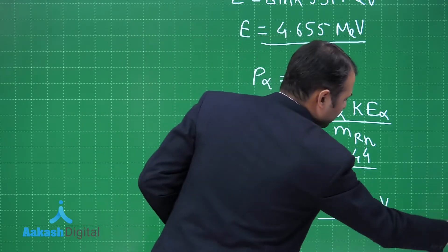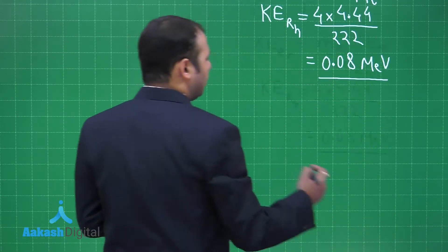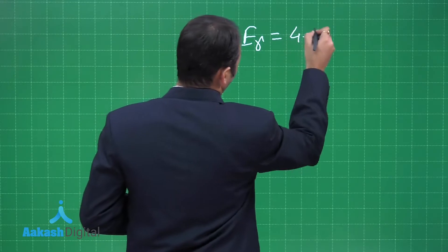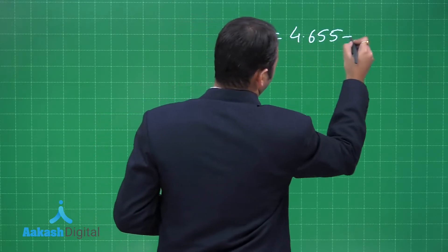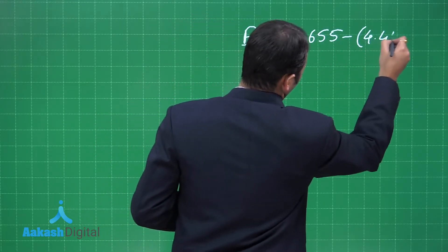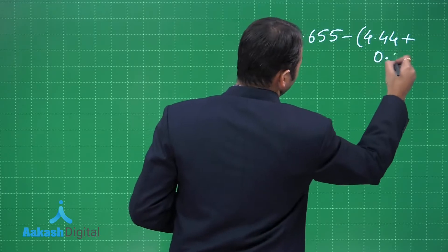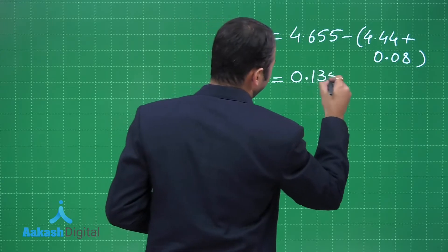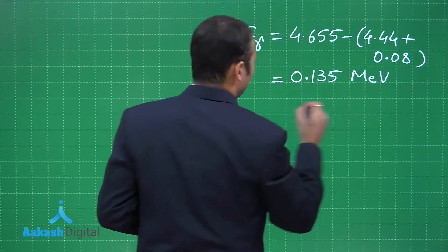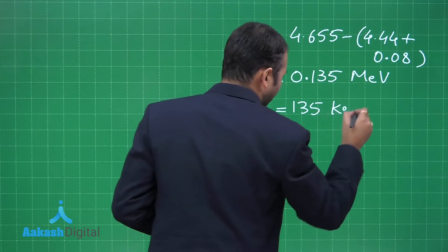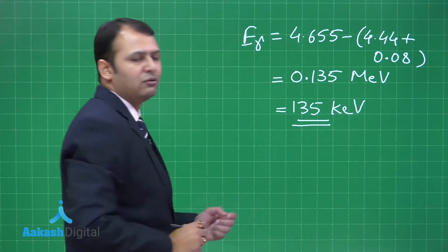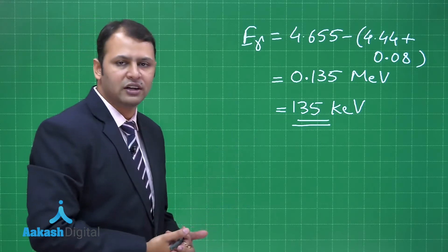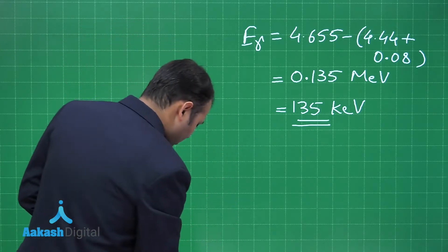The total energy of the gamma particle is simply: E_gamma = 4.655 MeV (total available) − 4.44 MeV (alpha) − 0.08 MeV (radon nucleus) = 0.135 MeV, or 135 kilo electron volts. This is the right answer for this question. Now let's move on to question number two.